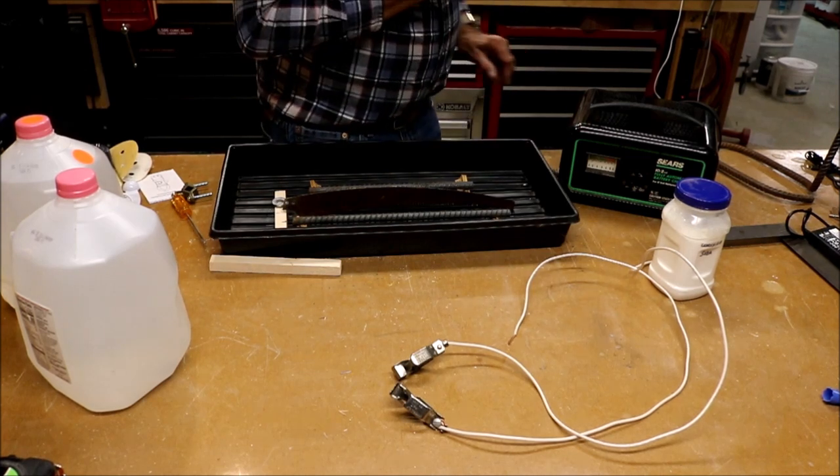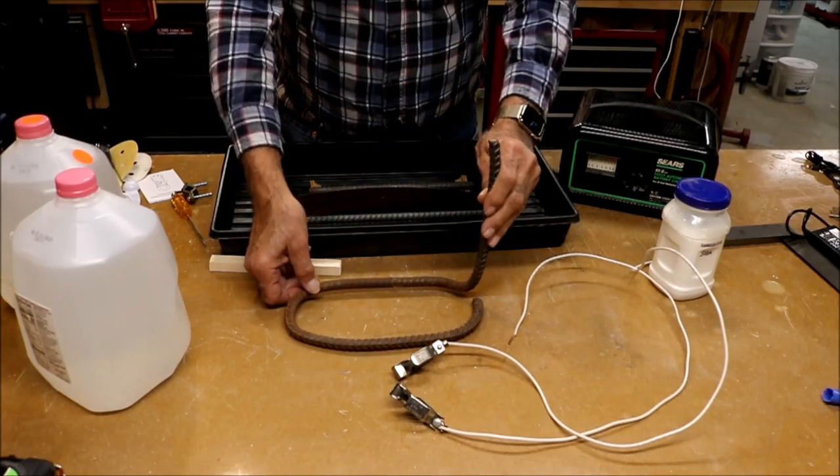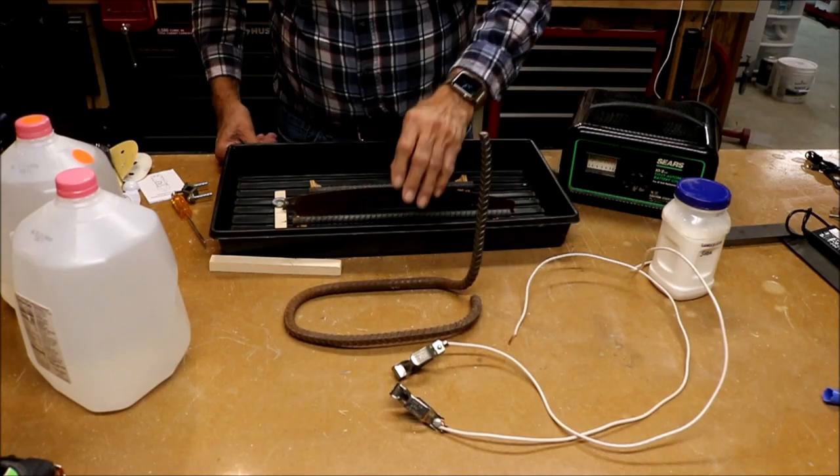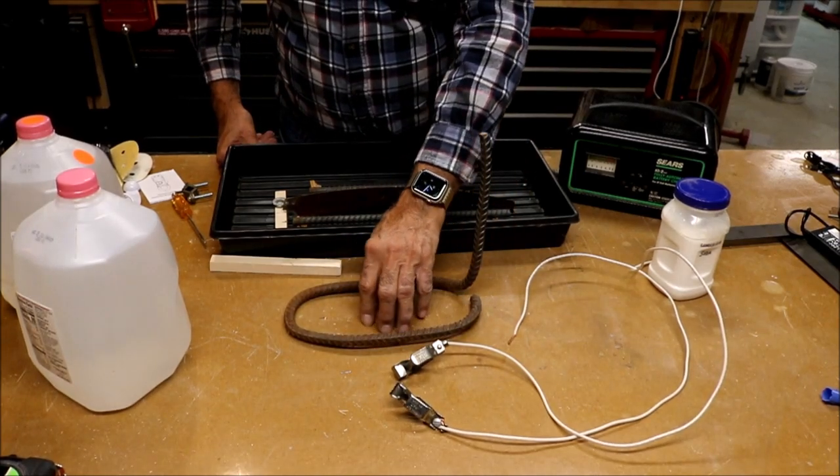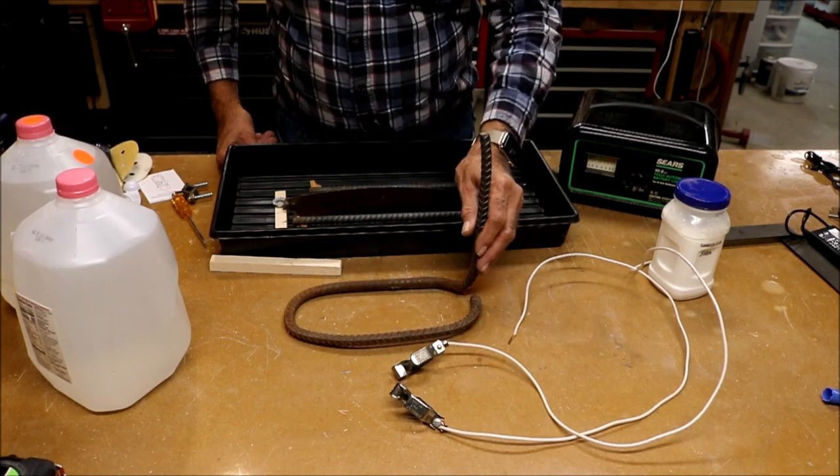Now I made one of these up for smaller parts. And you can see it surrounds or it will surround a smaller part in here. And that's the ideal solution. You want the iron to be surrounding the part you're taking the rust off of.